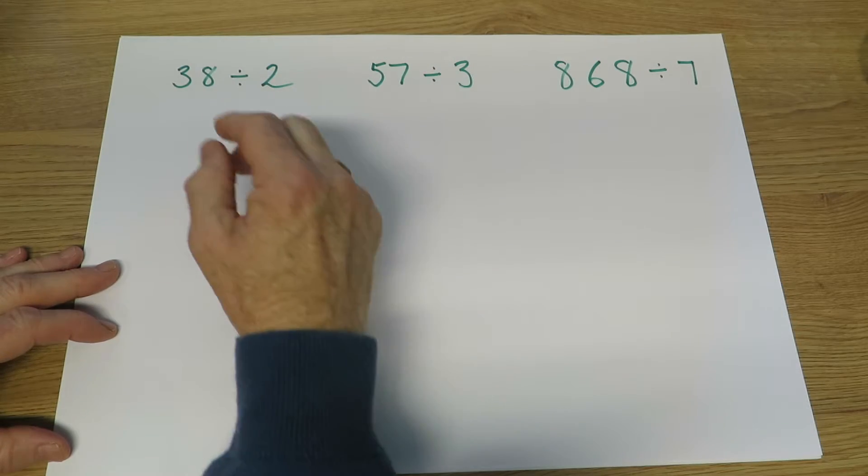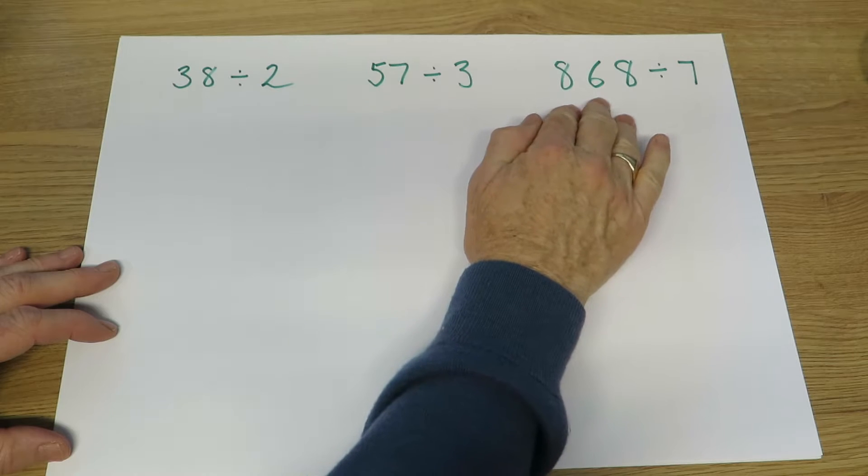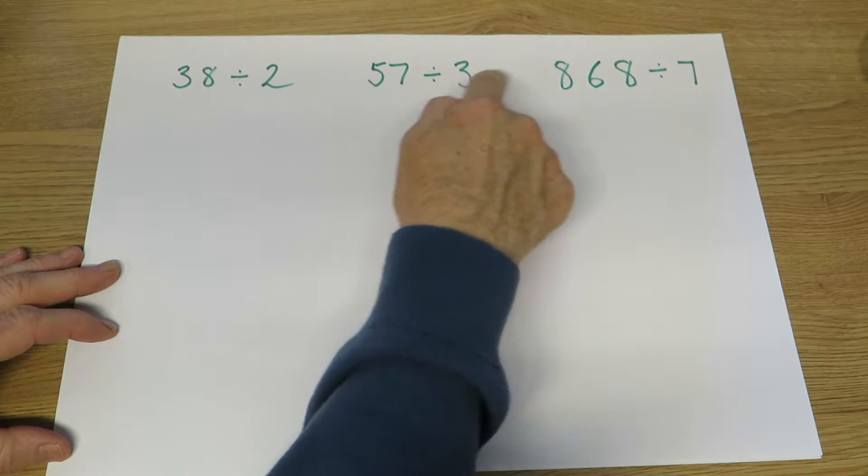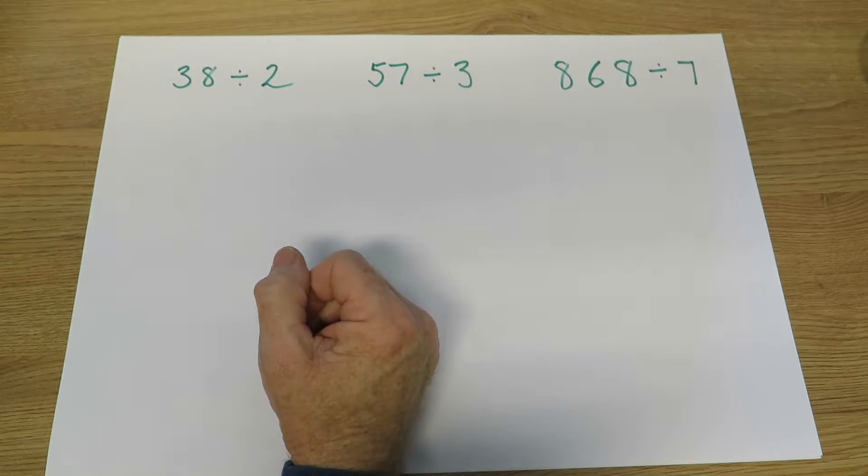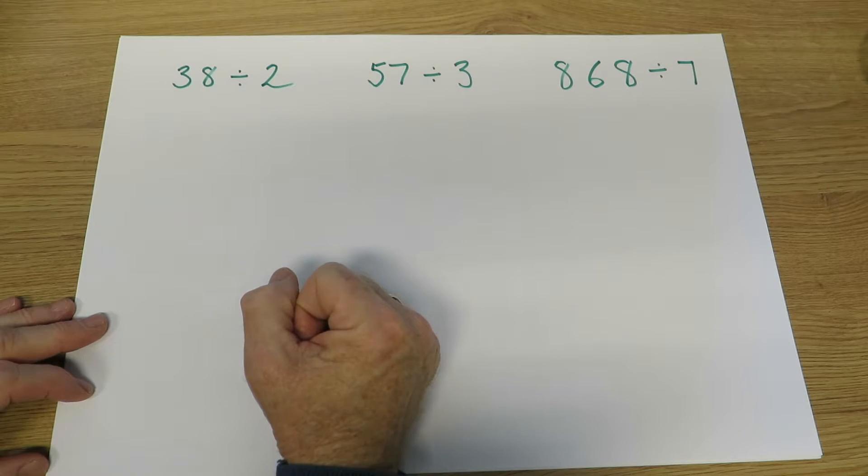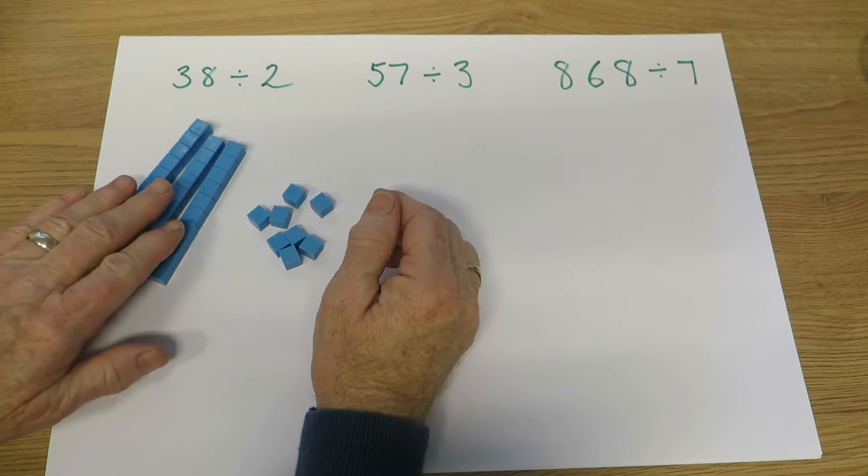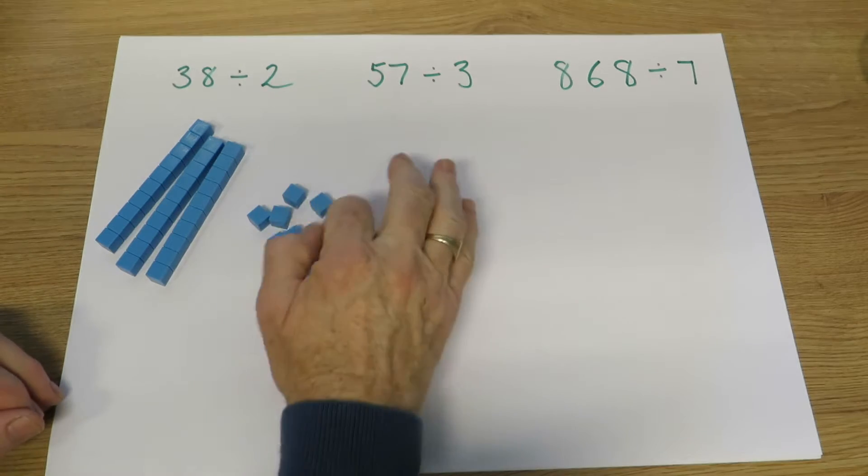They will continue to learn how to divide two-digit and three-digit numbers by one-digit numbers. They may use some equipment to illustrate this type of question. For example, here's 38, three tens and eight units.